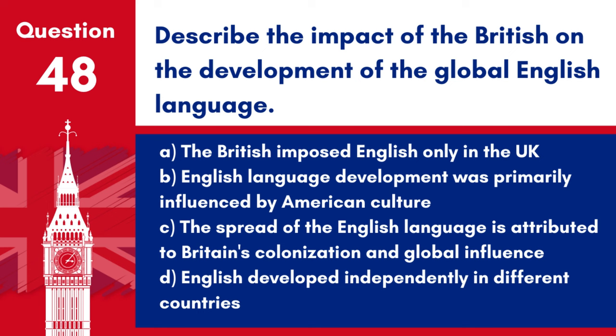Question 48: Describe the impact of the British on the development of the global English language. a. The British imposed English only in the UK. b. English language development was primarily influenced by American culture. c. The spread of the English language is attributed to Britain's colonization and global influence. d. English developed independently in different countries. Answer: c. The global spread of English can largely be traced back to the British Empire, which established English as a primary language in administration, education, and trade in its colonies.